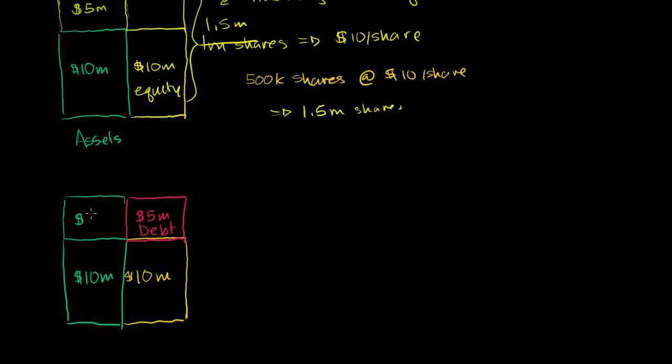So in either situation, the asset side of our balance sheet looks identical. The assets of the company are identical. We had our $10 million of assets, and now we have a factory. But in this first situation, I was able to raise that money by increasing the number of shareholders, by increasing the number of people that I have to split the profits of this company with. In this situation, I was able to raise the money by borrowing it.